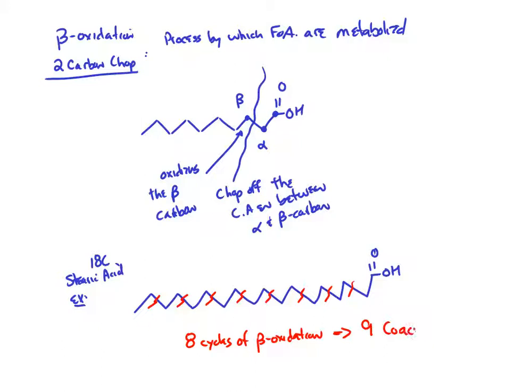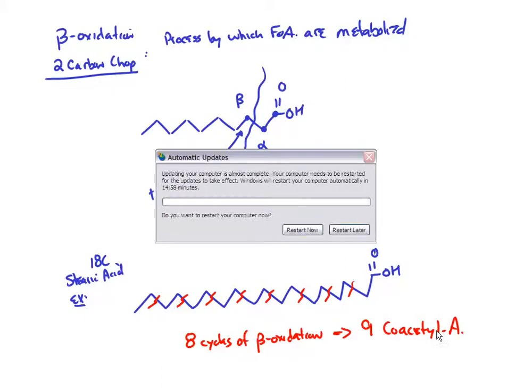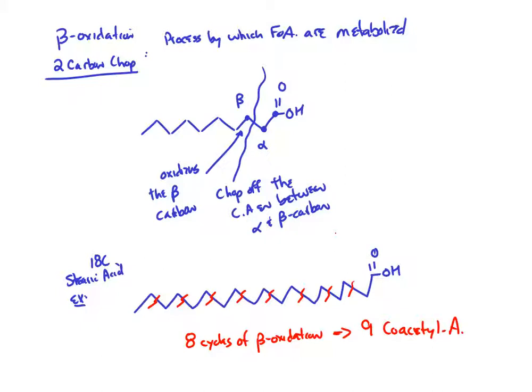Acetyl-CoA is what gets fed into the citric acid cycle. So what happens is we do beta-oxidation to chop up the fatty acid into a bunch of two-carbon chunks, and then we feed that acetyl-CoA into the citric acid cycle.